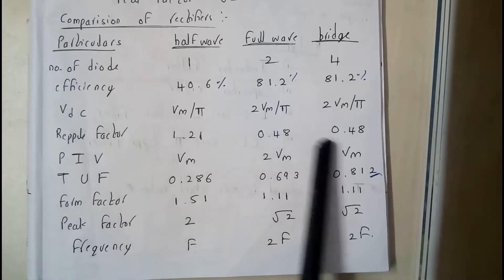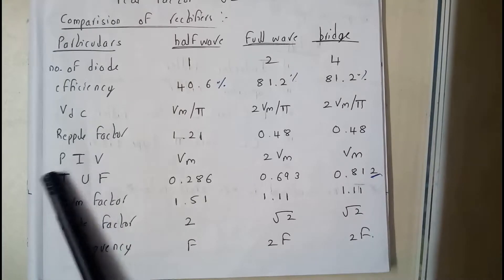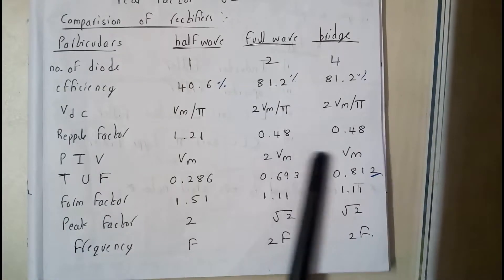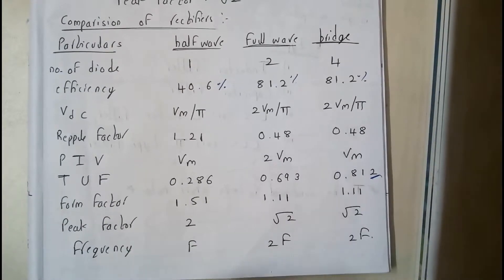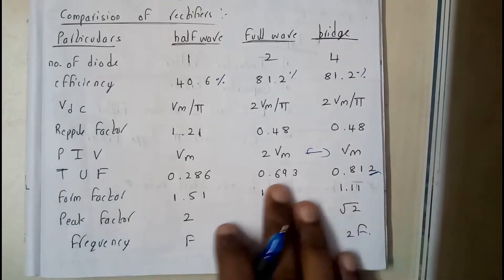Ripple factor: 1.21, 0.8, 0.48, 0.48. Peak inverse voltage: Vm, 2Vm, Vm. This is also a change, guys. TUF: 0.286,